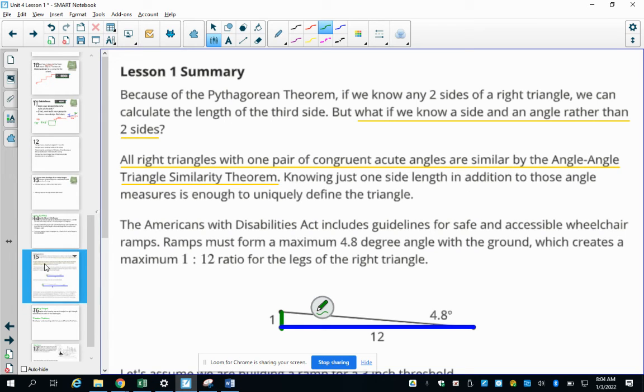All right, so a couple of things that we learned in this lesson is that if we know two sides of a right triangle, they can calculate the length of the third side. And if we know the side angle, if we know a side and an angle rather than two sides, so what happens then? So all right triangles with one pair of congruent acute angles are similar by angle angle. So if we have, we know that this is a right triangle, and then here's another right triangle. If this angle is the same as this, then these two triangles are similar, by angle angle.